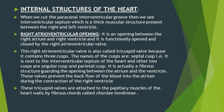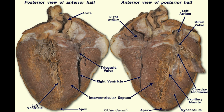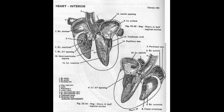Moving to the internal structures of the heart: cutting along the paraconal interventricular groove reveals the interventricular septum, a thick muscular structure between the right and left ventricles. The right atrioventricular opening is the opening between the right atrium and right ventricle, functionally opened and closed by the right atrioventricular valve.